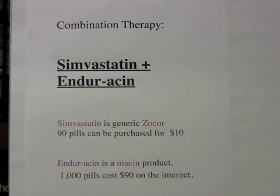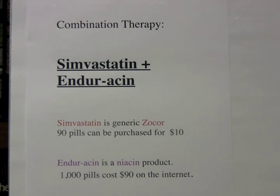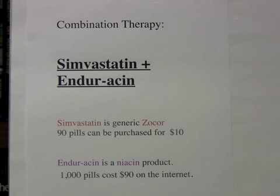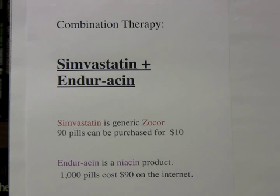If you have plaque found on the CAC or the CIMT, then you want to get regression of that plaque with combination therapy. There are two inexpensive and very safe drugs. Simvastatin is generic Zocor — ninety pills can be purchased for ten dollars. Enduracin is an over-the-counter niacin product — one thousand pills can be purchased for ninety dollars on the internet. You take one Enduracin twice a day with meals and one Simvastatin at bedtime.